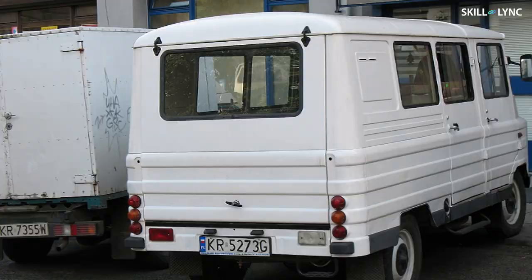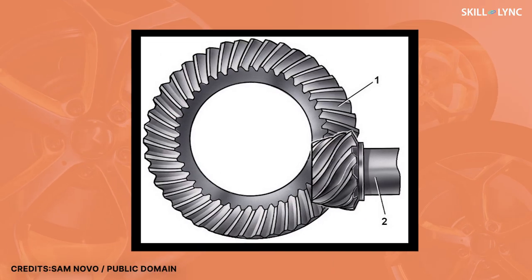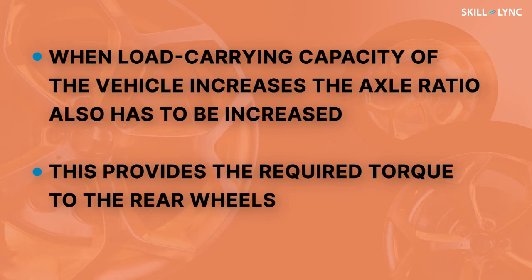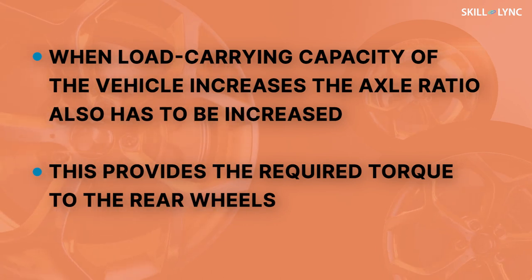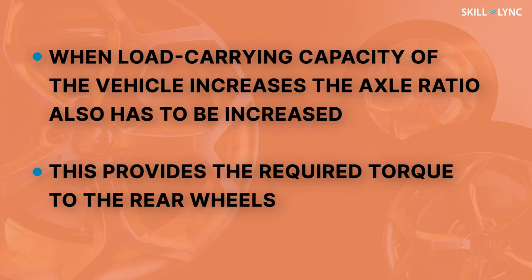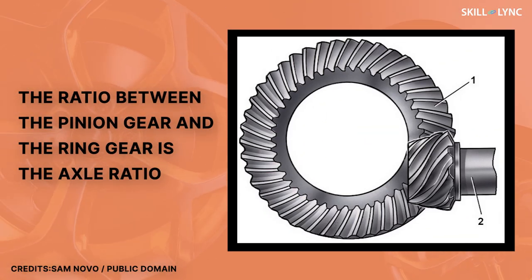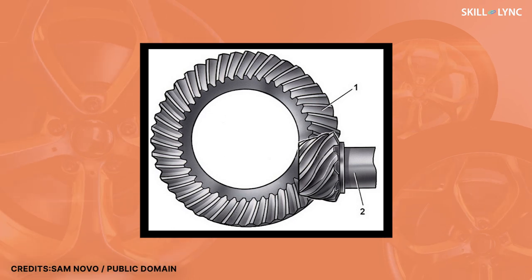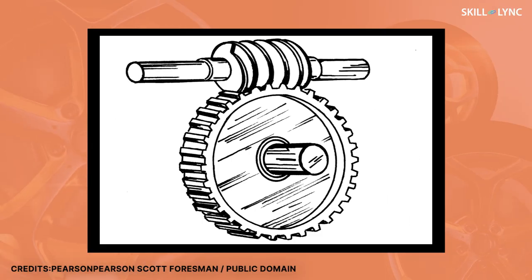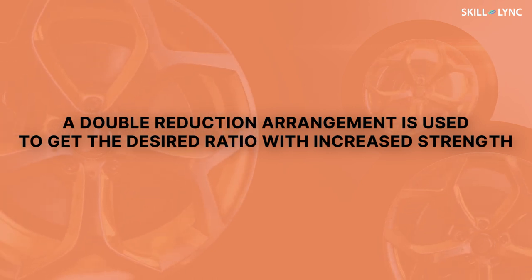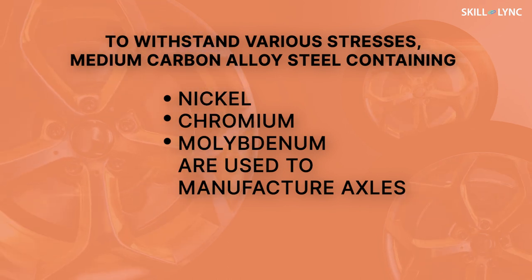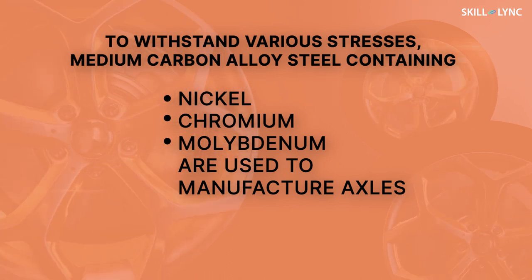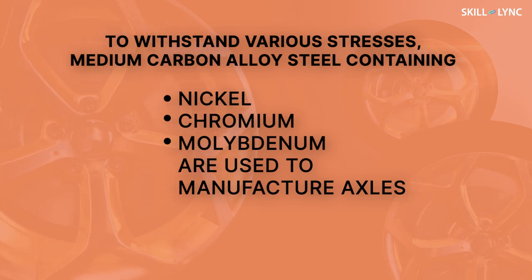Now let's see the construction of the rear axle. In light commercial vehicles, a hypoid type rear axle construction is used. When the load carrying capacity of the vehicle increases, the axle ratio also has to be increased to give the required torque to the rear wheels. The ratio between the pinion gear and the ring gear is the axle ratio. But when the axle ratio is approximately eight to one — that is, the ring gear rotates one time for every eight revolutions of the pinion gear — then the single bevel gear axle is avoided and a worm and worm wheel arrangement or a double reduction arrangement is used to get the desired ratio with increased strength. To withstand various stresses, medium carbon alloy steel containing nickel, chromium, and molybdenum are used to manufacture axles.